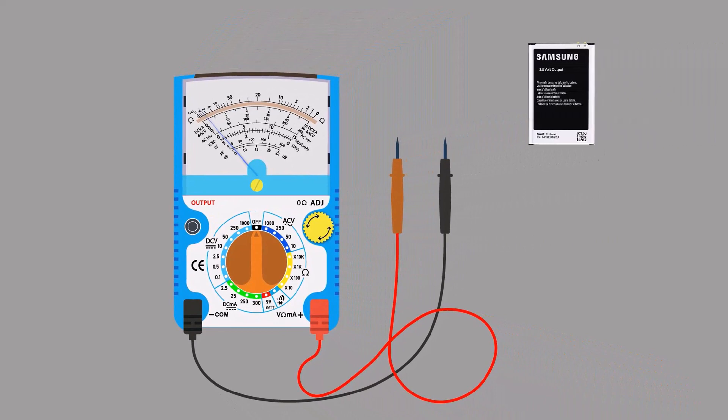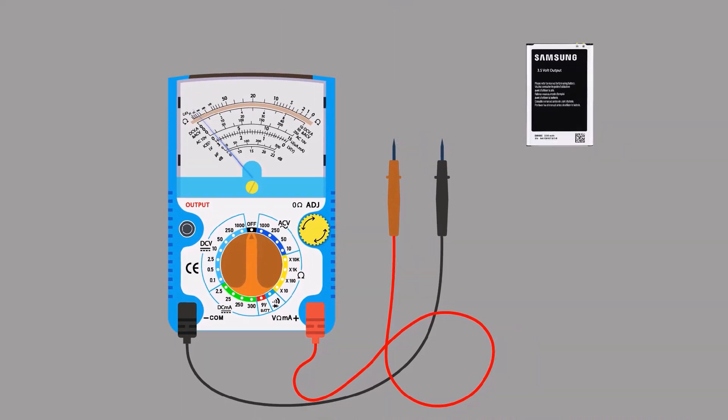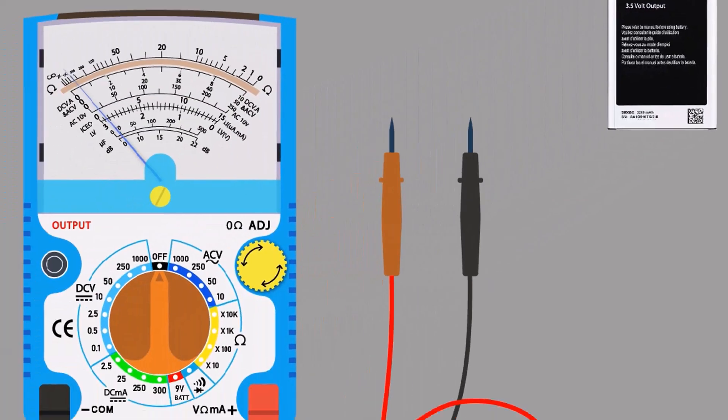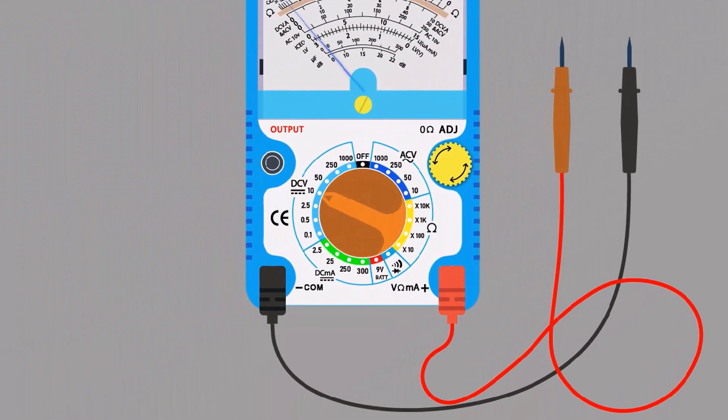I am taking a phone battery to measure DC voltage. That terminal is positive and that terminal is negative. If we see here, it's a 3.5-volt battery, so we need to select the 10-volt range. If we don't know the voltage of the battery, we should select the maximum voltage range of the multimeter firstly, then decrease as needed.